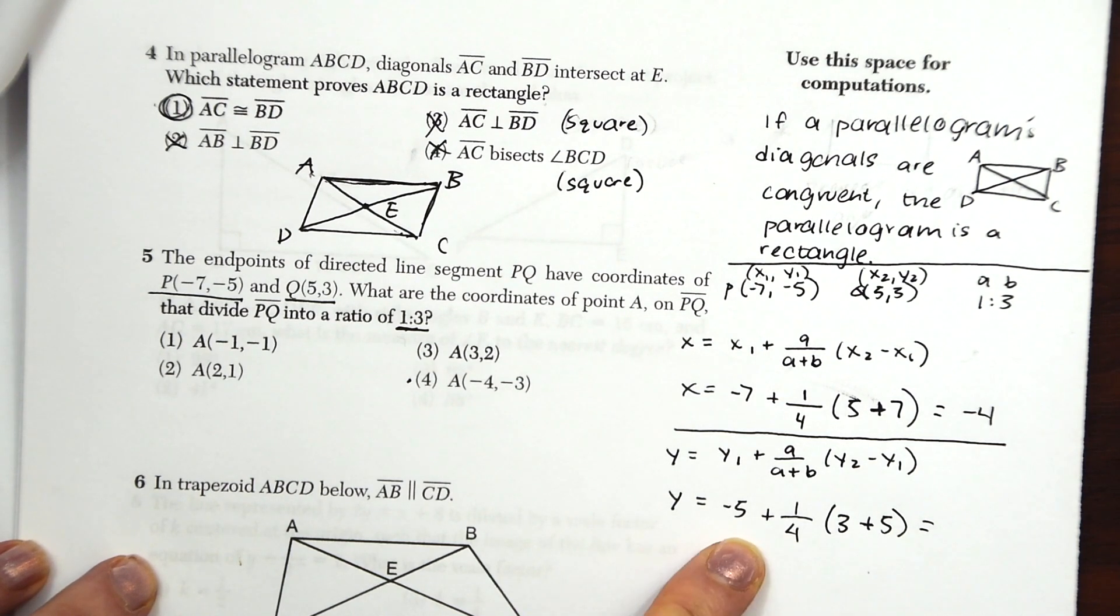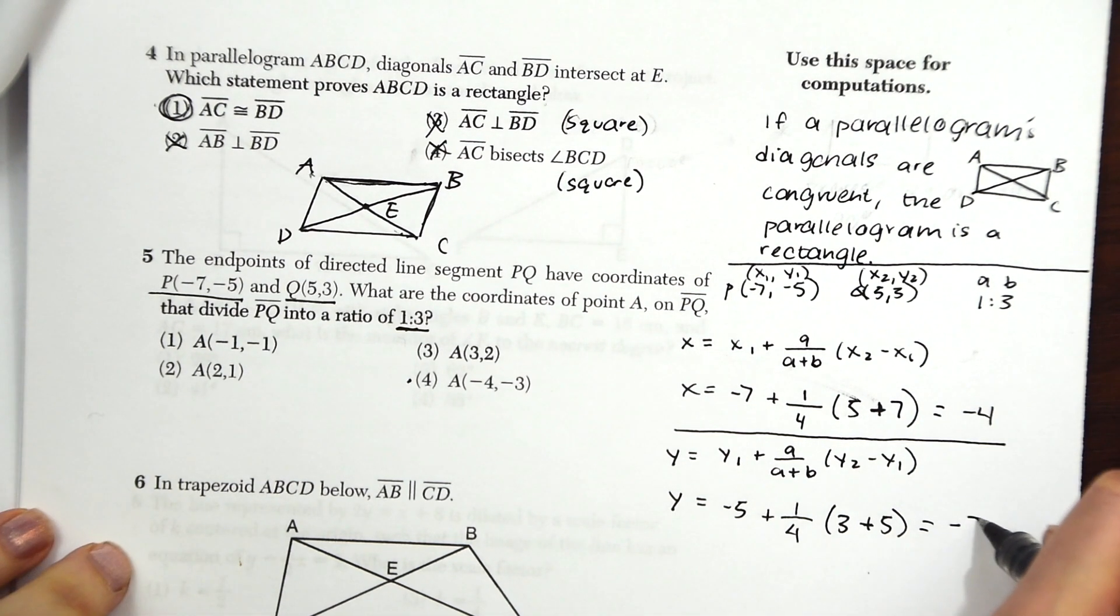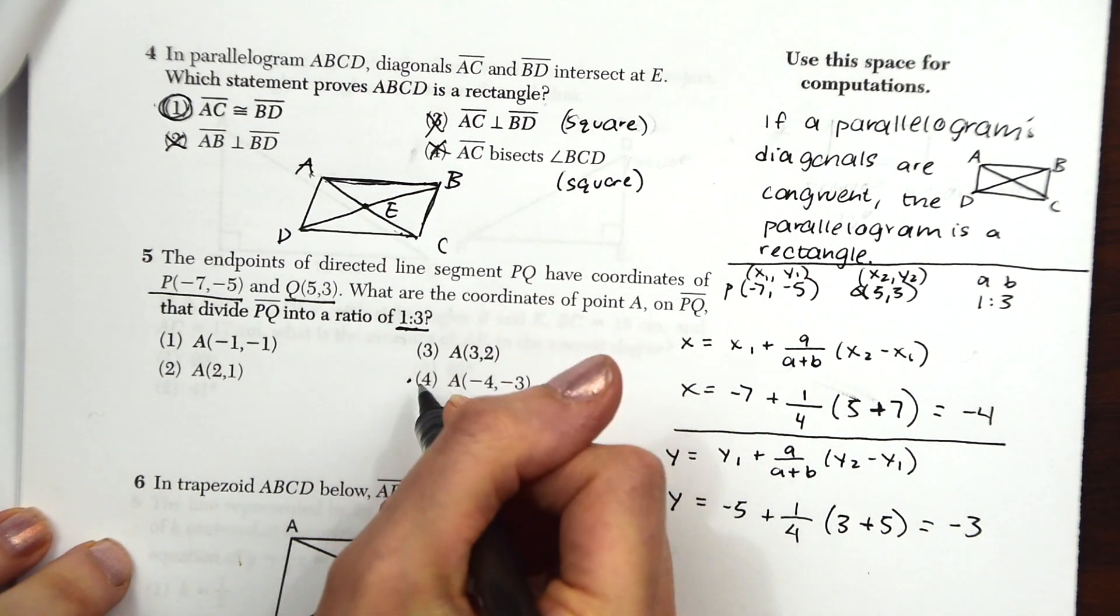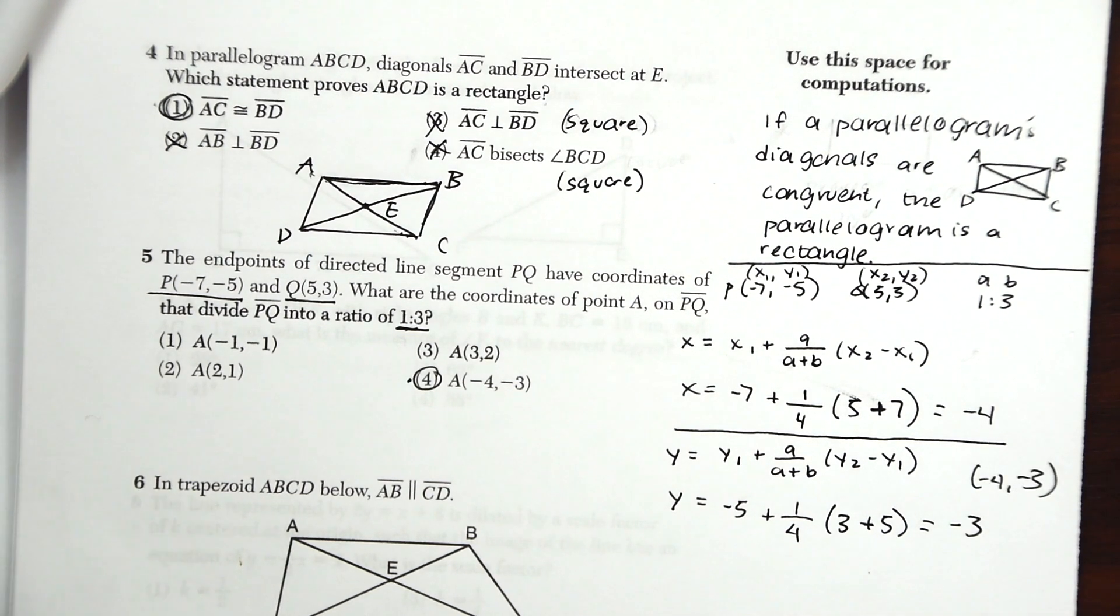It's kind of like 8 divided by 4, which is 2. And then plus negative 5. So negative 5 plus 2 is negative 3. Y is negative 3. So our full coordinate point is choice 4, negative 4, negative 3. And that's our answer.